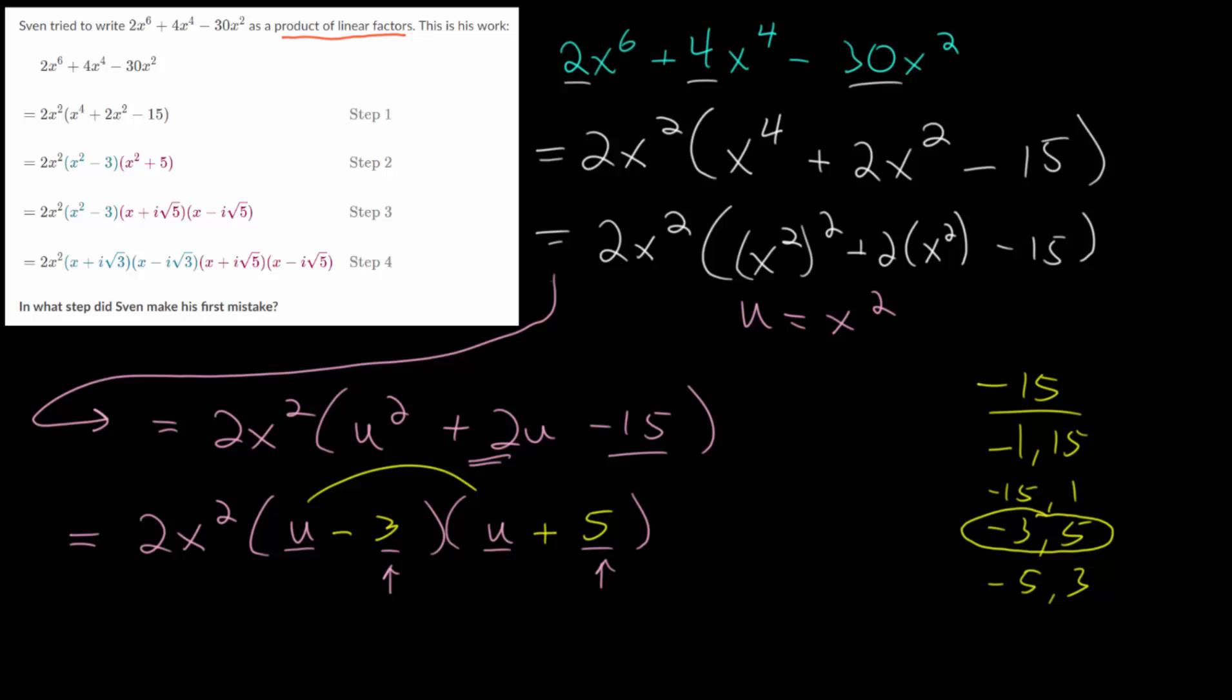At this point, we started with the variable x, so we want to go back to that. We know u is equal to x squared, so let's just rewrite this as 2x squared multiplied by x squared minus 3 multiplied by x squared plus 5. We can check our work compared to his work and see that step 2 looks okay as well.